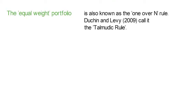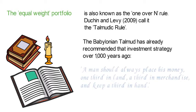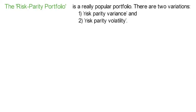The equal weight portfolio is also known as the 1-over-N rule. Dutchin and Levy 2009, among many others, call it also the Talmudic rule. The reason is that the Babylonian Talmud has already recommended debt investment strategies 1,000 years ago. It is said that a man should always place his money one-third in land, a third in merchandise, and keep a third in hand.